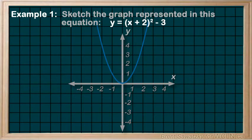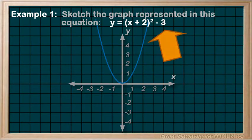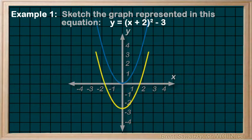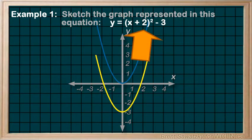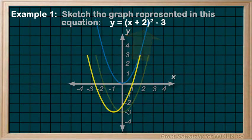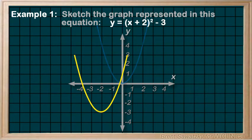Now we see that we have two translations in this one. This negative 3 at the end tells us that the graph is shifted down by 3, and that's our vertical translation. This plus 2 in here tells us that the graph is shifted left by 2, and that's our horizontal translation. And voila, there's our resulting graph.